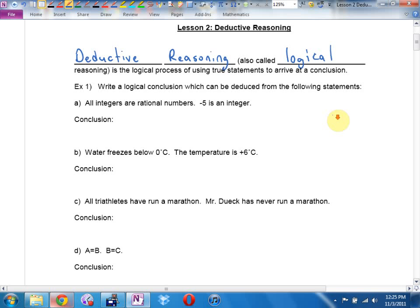Sorry? We're doing A. You're on B, and you're right, but let's get there. A. All integers are rational numbers, negative five is an integer. Conclusion. Boston, you're right, say it louder.